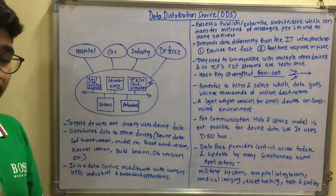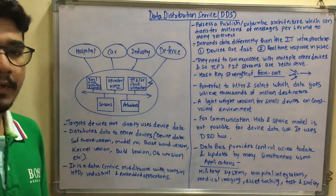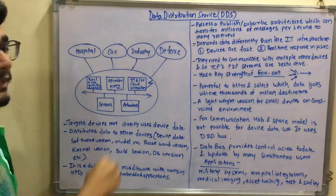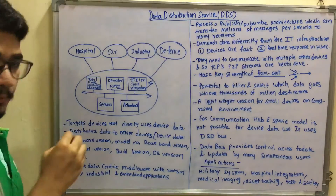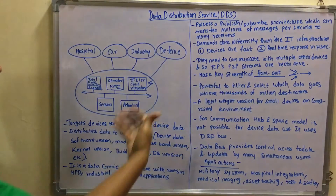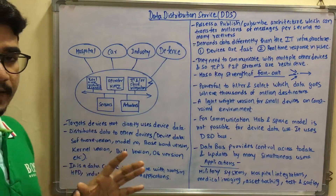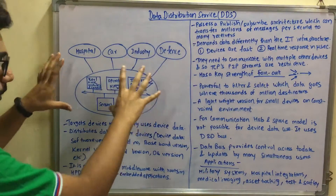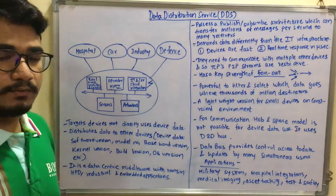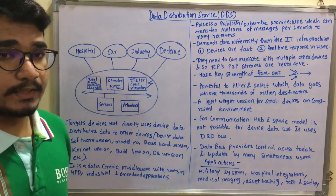This service basically targets devices that directly use device data — it's pure M2M communication, machine to machine, with no human involved in any scenario. It distributes data to other devices. You can consider it as a device-centric middleware that has its roots in high-performance defense, military activities, and industrial applications.